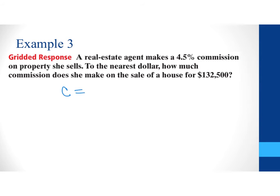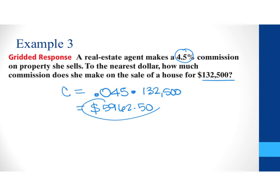We're going to say that our commission is equal to the percentage which we have here so I have 4.5% and I'm going to write that as a decimal first so that's .045 and we take that percent and we multiply it by our dollar amount which in this case is $132,500. So, if you multiply that out, this real estate agent is going to make $5,962.50 in commission.